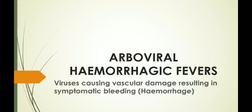Hello students, this is a lecture series on Arboviral Hemorrhagic Fever. Before we delve into the topic proper, it is worthwhile to note that hemorrhagic fevers are a group of illnesses causing vascular damage resulting in symptomatic bleeding or hemorrhages. These hemorrhages can occur under the skin, in the internal organs or even from the external body orifices such as mouth, eyes or ears. Apart from Arboviruses, hemorrhagic fevers are caused by filoviruses such as Ebola and Marburg virus and rodent-borne viruses such as Hanta and Arena viruses.